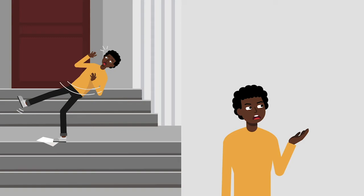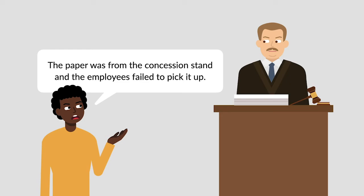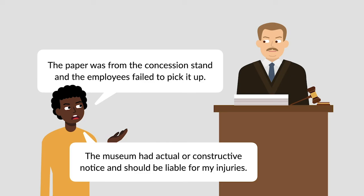Gordon sued the museum for negligence. He claimed that the paper had come from the concession stand, and that the museum's employees had negligently failed to pick up the paper before Gordon could slip on it. He argued that because the museum had actual or constructive notice of the dangerous condition created by the paper's presence on the steps, it should be liable for his injuries.